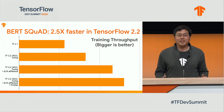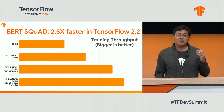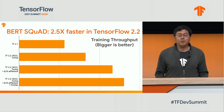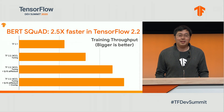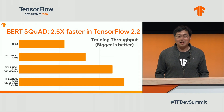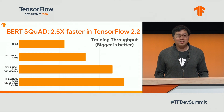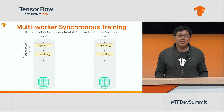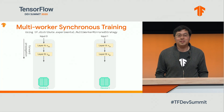Here is a quick demonstration of the BERT SQuAD training throughput. Starting from the first line, this is the training throughput using TensorFlow 2.1 out of the box. With three optimizations in TensorFlow 2.2 that I'm going to introduce today, the model is now running 2x faster. I'm excited to show these optimizations, but before diving in, let me provide some background on how the model is synchronously trained on multiple hosts and multiple GPUs.